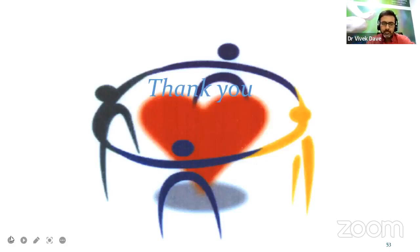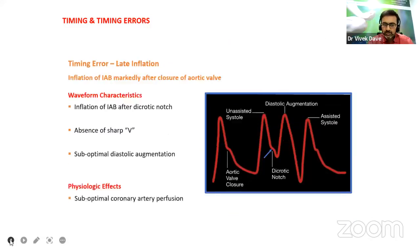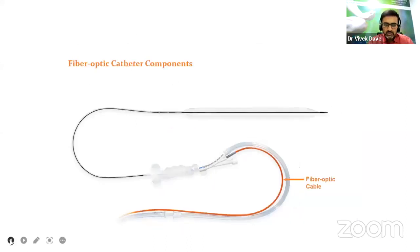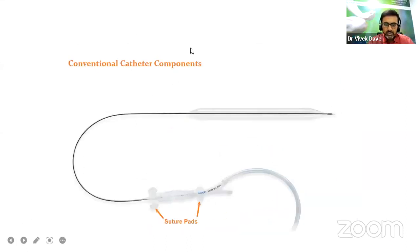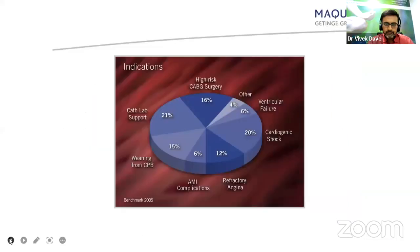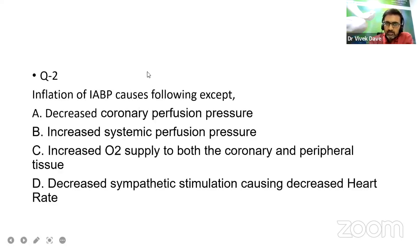Thanks a lot. Now let's go back to those basic questions. Which gas is used in IABP? Carbon dioxide, argon, helium, or nitric oxide? The answer is helium, because it lowers the chances of air embolism as well.